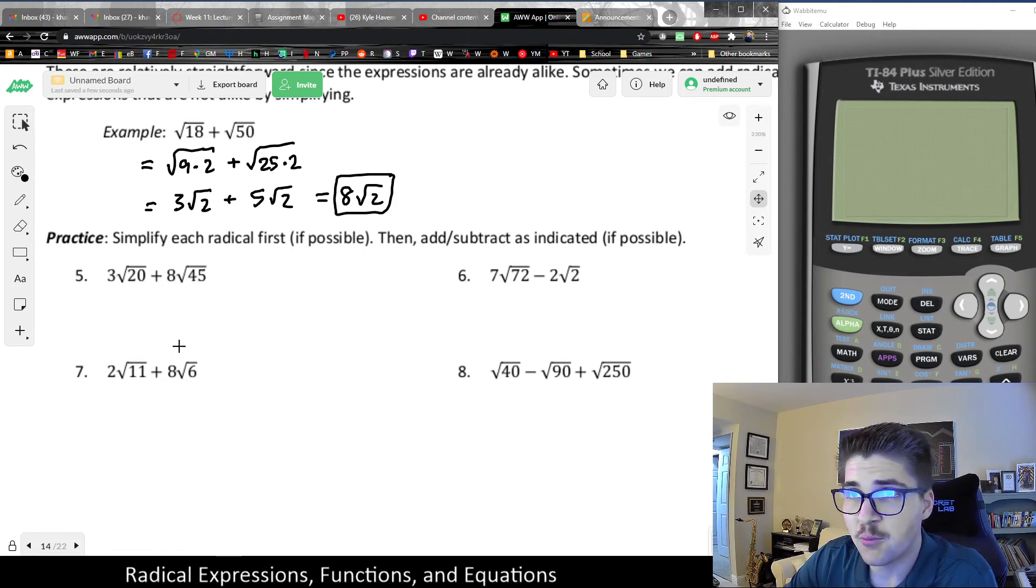Like for example, with number 7, that one will not simplify because 11 and 6 don't simplify. 11 is a prime number. You can't break that down. 6 is 2 times 3. There's no perfect squares in there. So here, there's nothing you can do. Don't try to add them together if you don't know how.